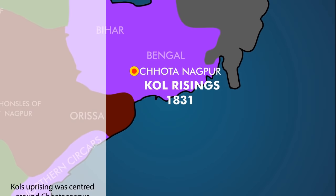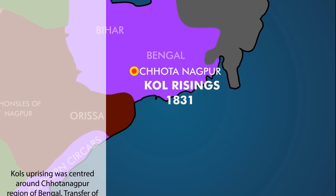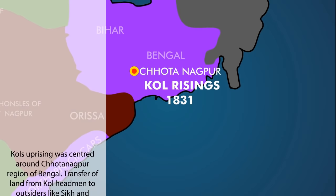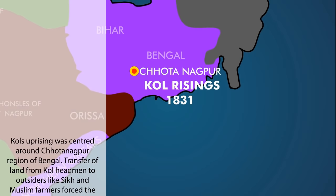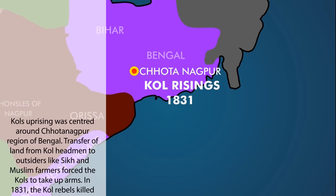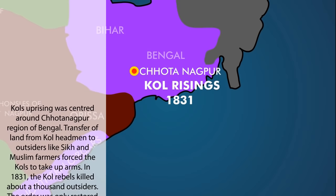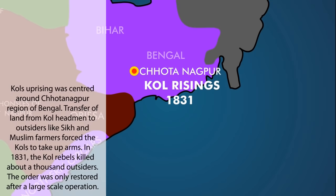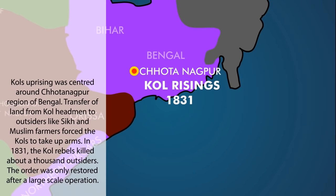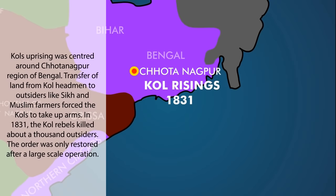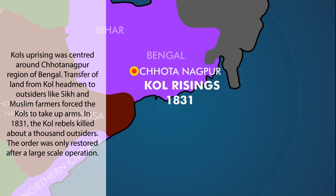The Coal's uprising was centered around the Chotanagpur region of Bengal. Transfer of land from coal headmen to outsiders like Sikh and Muslim farmers forced the Coals to take up arms. In 1831, the coal rebels killed about a thousand outsiders. The order was only restored after a large scale military operation.